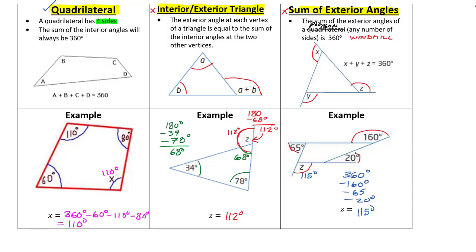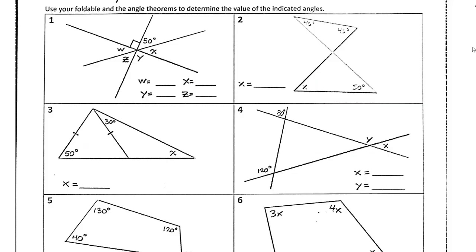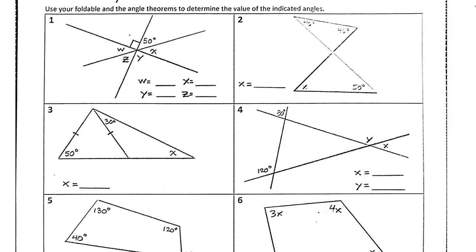Let me do some quick examples. For the first one, I can see a 90-degree angle, and by the opposite angle theorem, y is also 90. This whole side has to make 180, and since one side is already 90, x has to be 40 because 40 plus 50 makes 90. So 90 plus 50 plus 40 makes 180 — the half circle checks out.